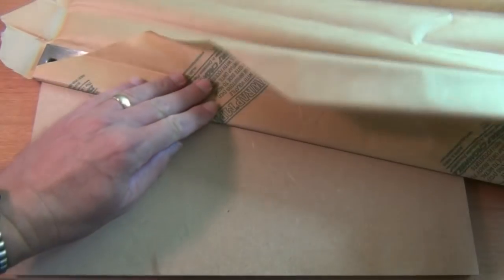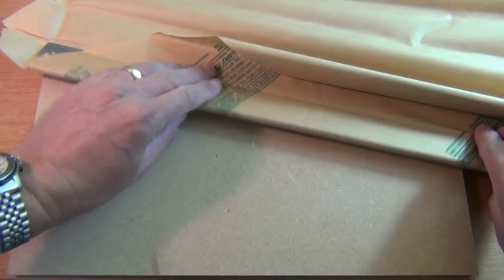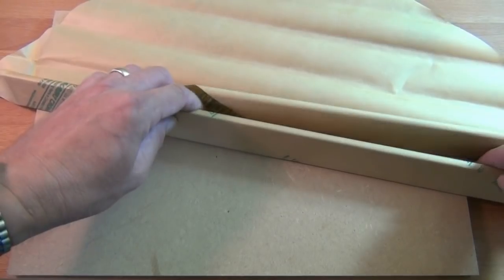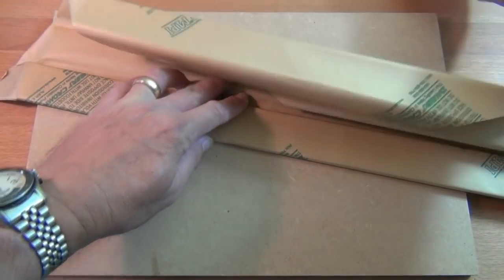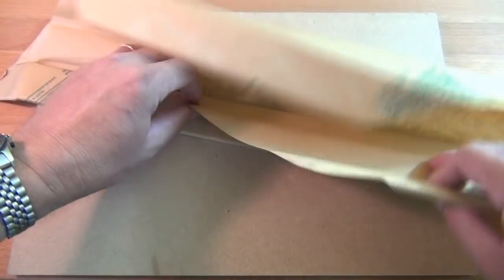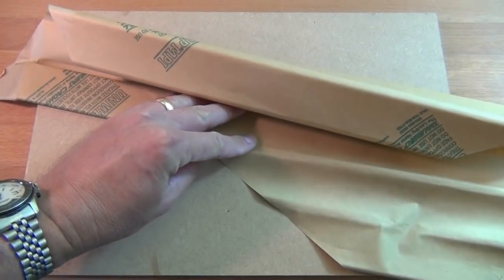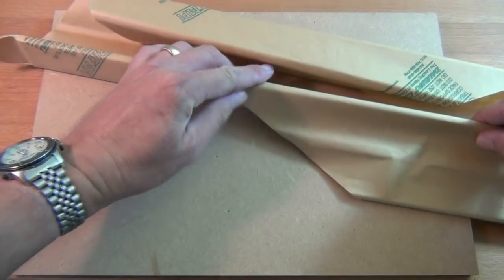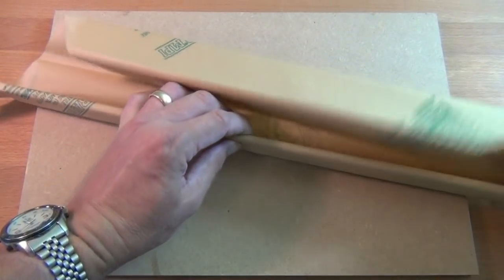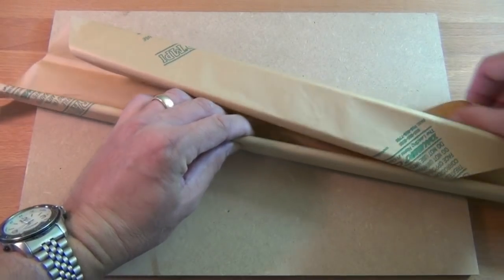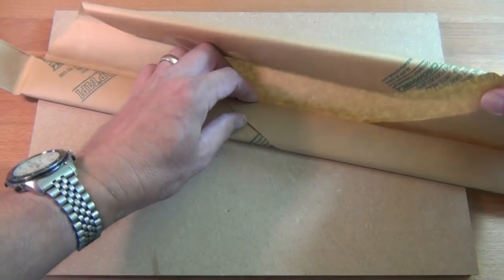If you do opt for a precision straight edge, remember to take care of it. Keep the original wrapping that it came in, which will have, if it's a metal straight edge, a rust inhibitor in the paper. And it gives it sufficient protection for everyday handling.